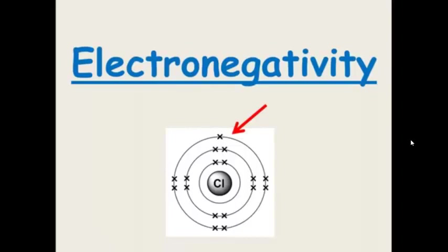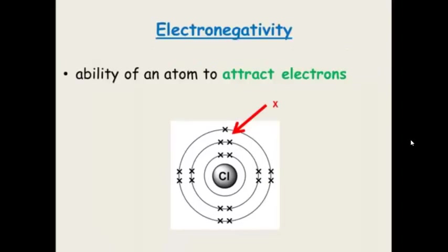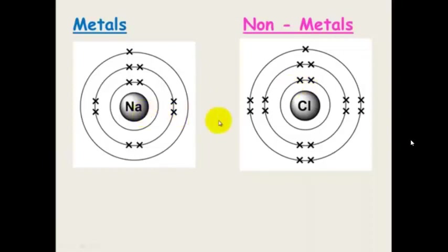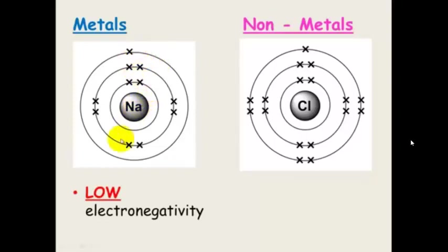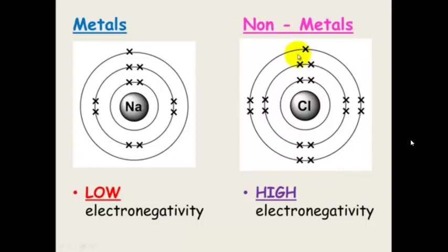Electronegativity — think of it as the opposite of ionisation energy, because it is the ability of an atom to attract electrons. Looking at sodium and chlorine: sodium's ability to attract electrons is not high because it wants to give away that electron, so it has low electronegativity. Whereas chlorine wants to attract an electron — it has more protons in the middle and only needs one more electron to get a full outer shell, so it has high electronegativity.